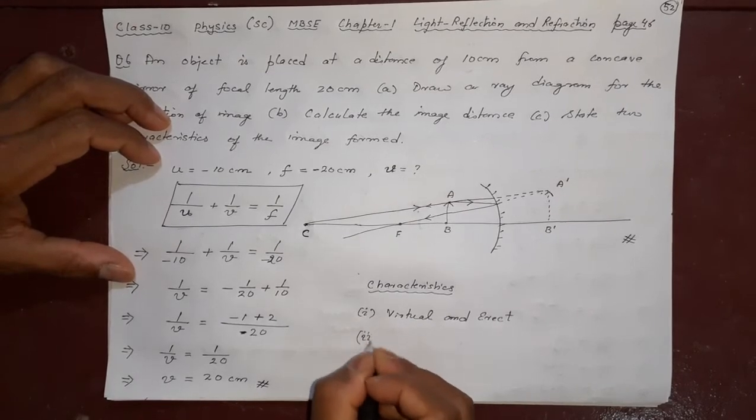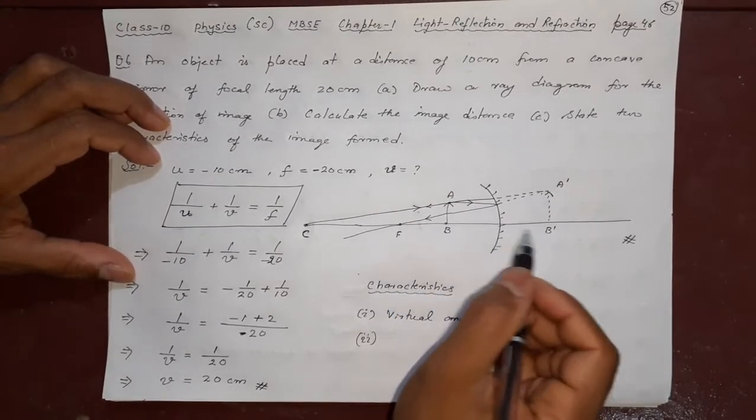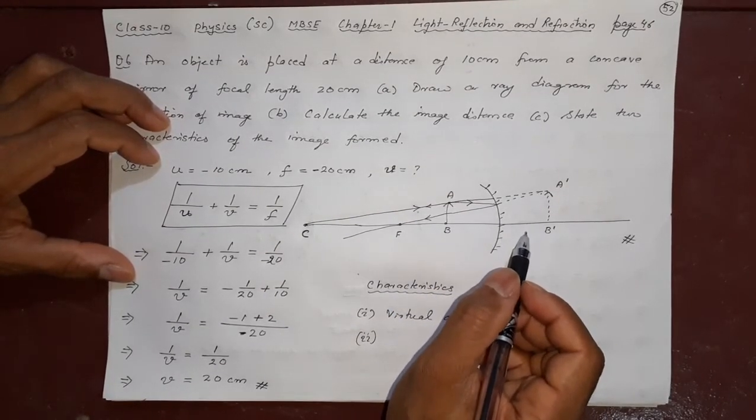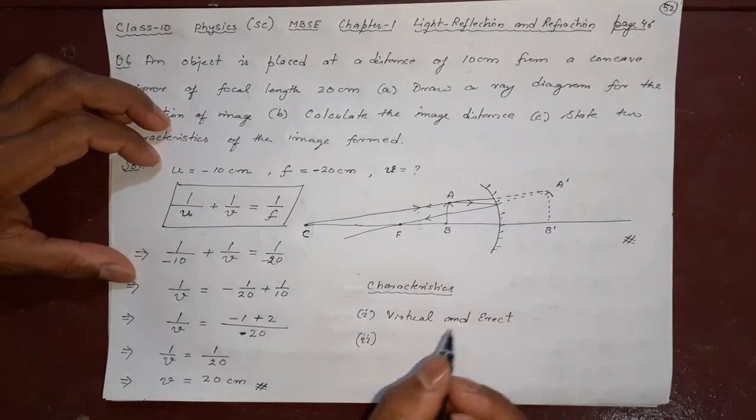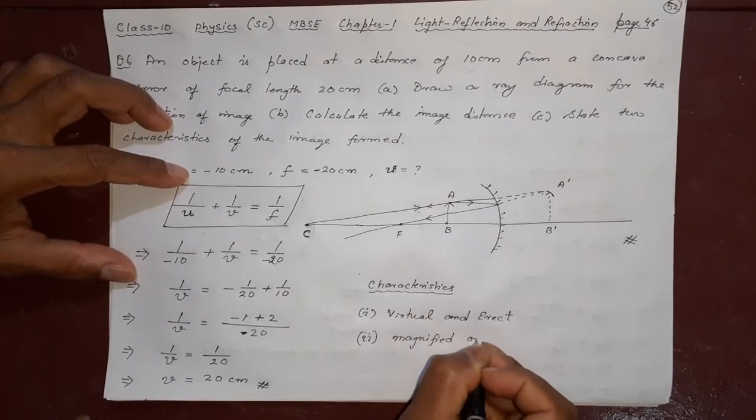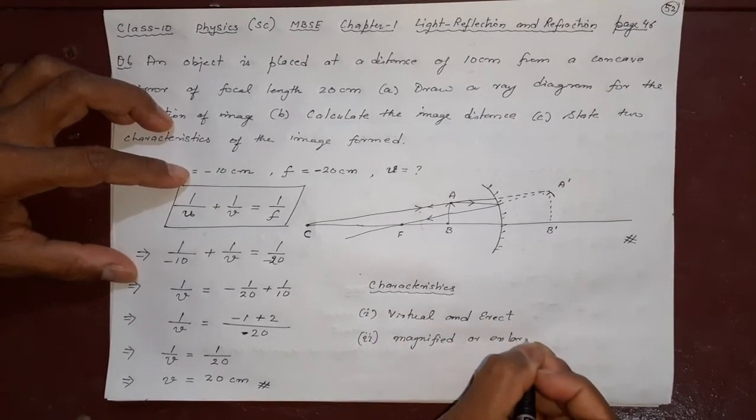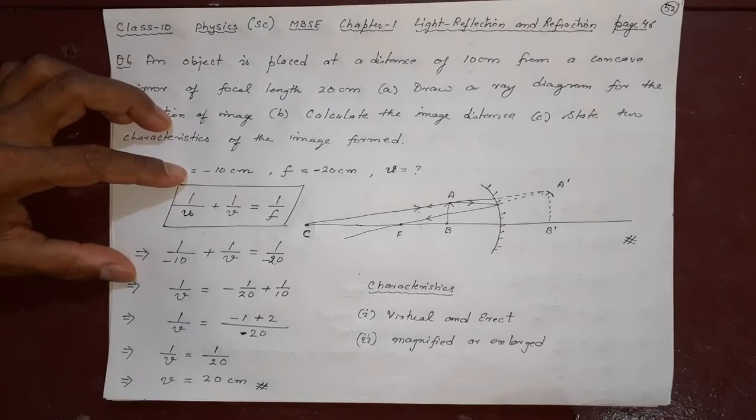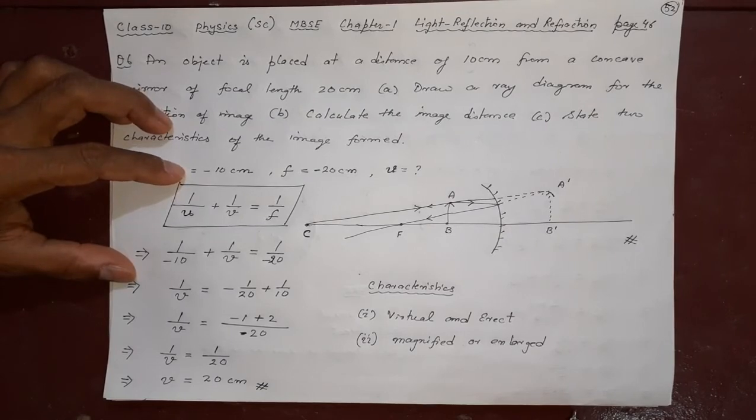The second case is it is an enlarged image. You can see it is a big image. Not same size. It is a magnified. Magnified image or enlarged has become bigger image. This is the characteristics of the image.